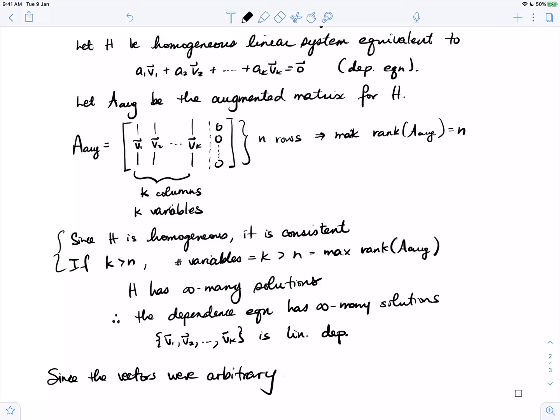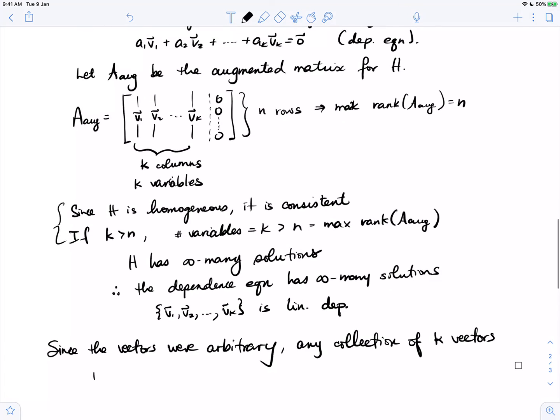And since these vectors were arbitrary, any collection of k vectors in R^n is linearly dependent if k is greater than n.